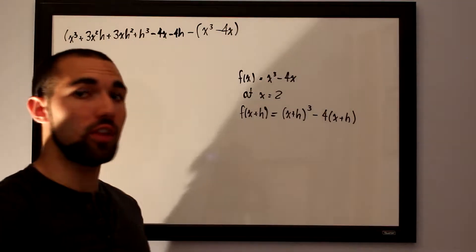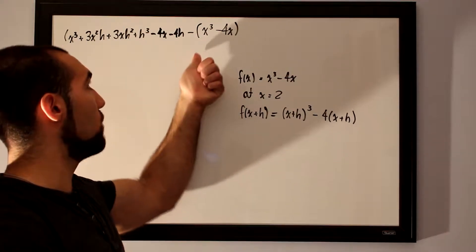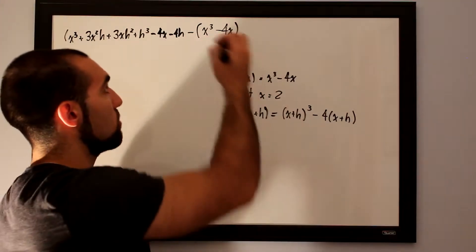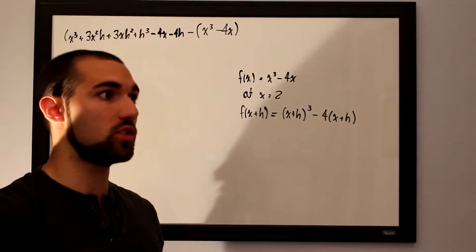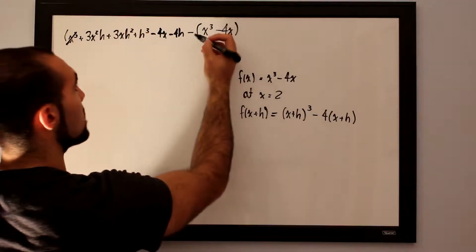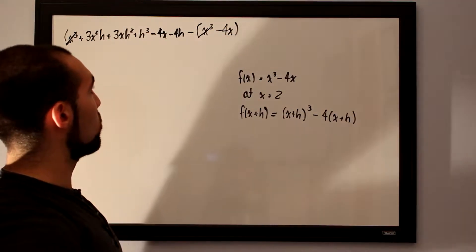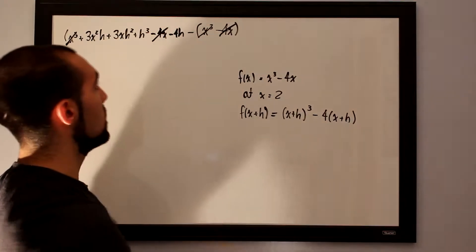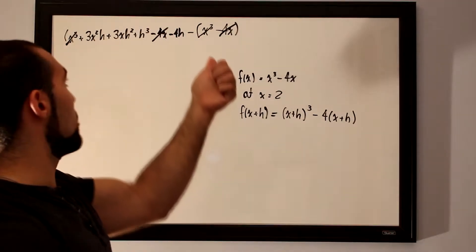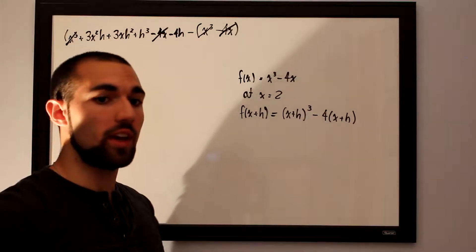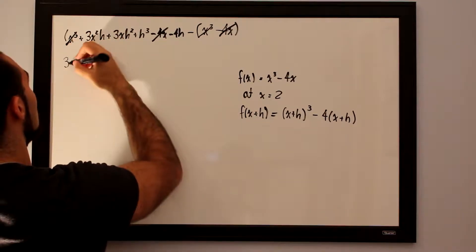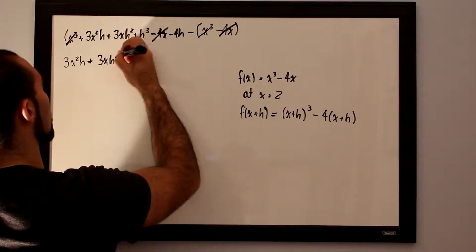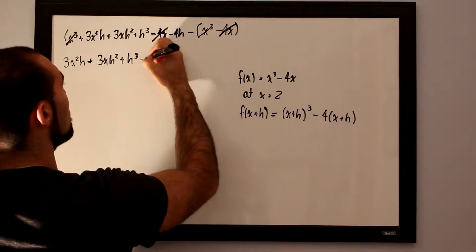We distribute that negative sign to the entire function, meaning we subtract negative 4x — or add 4x. The x cubed terms cancel each other out, and the negative 4x cancels with the positive 4x. So we're left with everything else: 3x squared h plus 3x h squared plus h cubed minus 4h.